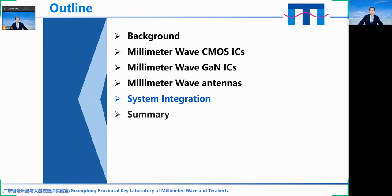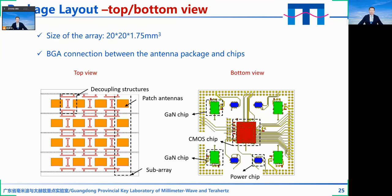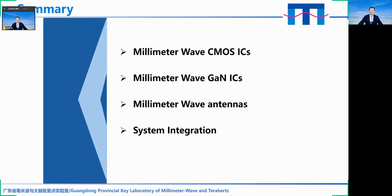The next part shows that the CMOS transceiver chip, GaN front-end module, and antenna array are integrated into a complete system. The two figures show the top and bottom views of the integrated system. The antenna patch and the coupling strip can be seen from the top view. The chips and interconnection lines can be seen from the bottom view.